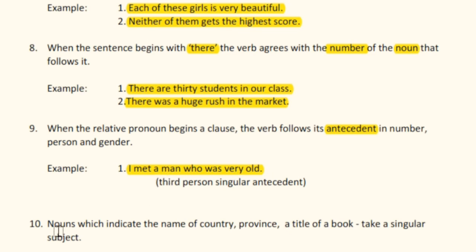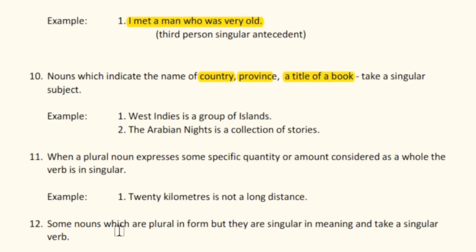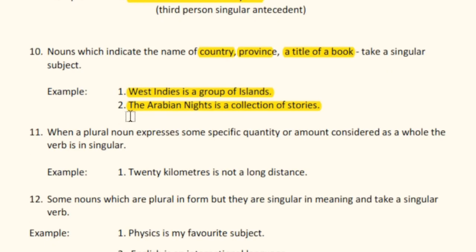Rule number ten: nouns which indicate the name of a country, province, or title of a book take a singular verb. For example, 'West Indies is a group of islands.' Second example: 'The Arabian Nights is a collection of stories.' Here 'The Arabian Nights' is the title of a book, so the singular verb 'is' is used.